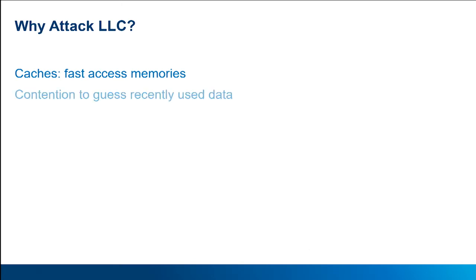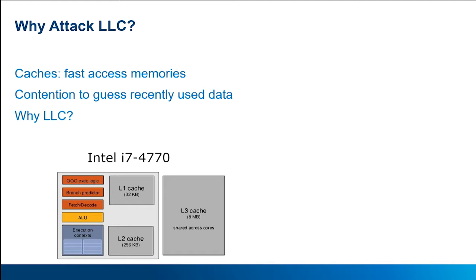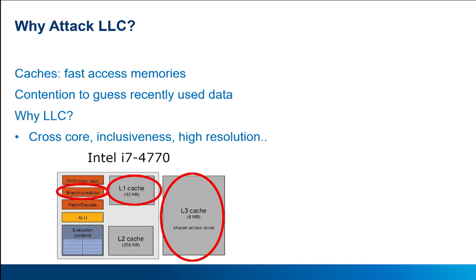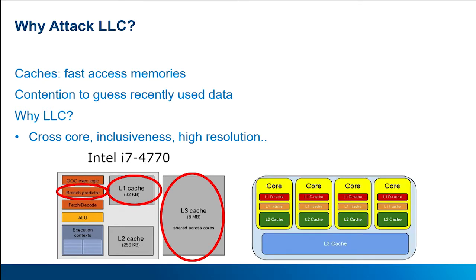An attacker might think: I could create the conditions to guess what has been recently used. And that's true. But why would someone pick the last-level cache? Well, one big advantage is that the last-level cache is shared across cores, making it a nice target — otherwise we would have to target the level-one cache or branch prediction unit, which are core-private resources. We also get high resolution in the last-level cache, and inclusiveness is a big advantage: any data residing in upper-level caches must also exist in the last-level cache. Therefore, if we manipulate the last-level cache, we also manipulate data in the upper-level caches.